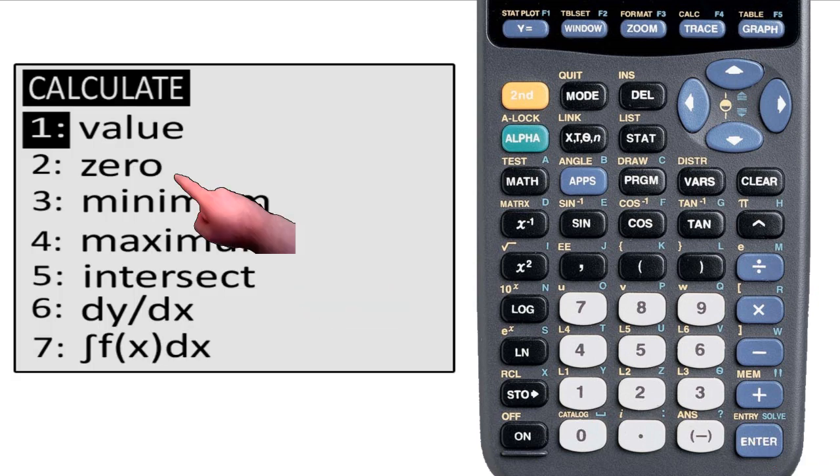Maximum and zero work exactly the same way. It tells you to select an interval and spits out the answer with varying success.